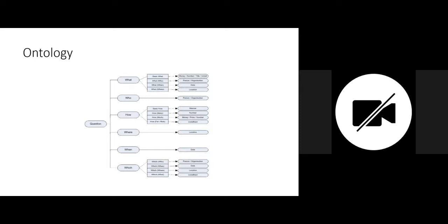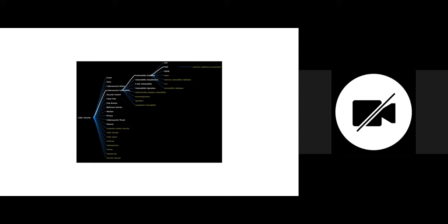We ask the five questions: what, who, where, when, which, and how. There's a small ontology we're using to identify answers to these questions from a particular story. Whenever you find a story online or a written piece of text, you can apply this ontology to create a knowledge graph and derive answers from that body of text. This is the hierarchy of concepts we are mining — a tree graph of a taxonomy showing relations between different components in the cybersecurity domain.